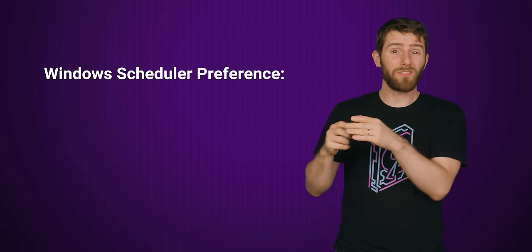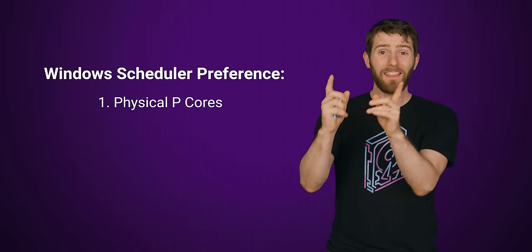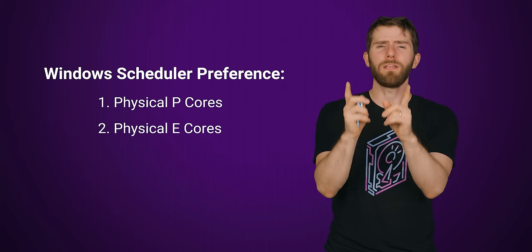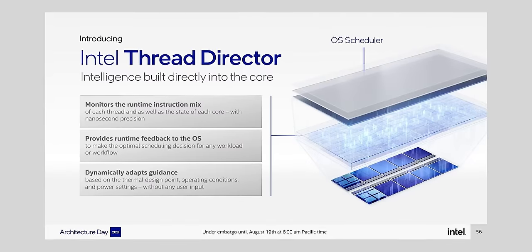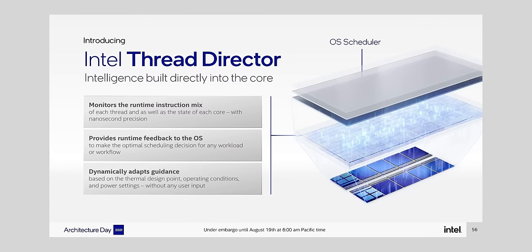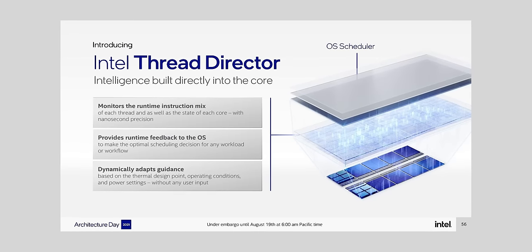Even though the Windows scheduler will still use P cores first by default, if they're not busy it can then use an E core for a second thread before using the slower hyper-threading feature of a P core. We're also getting to the point where, although Windows is still making final decisions on scheduling, there are now hardware assist features on newer CPUs that will actually give advice to Windows. A CPU can look at the incoming workload and advise Windows on the best current core for a certain thread, depending on whether Windows wants more performance or better power efficiency.